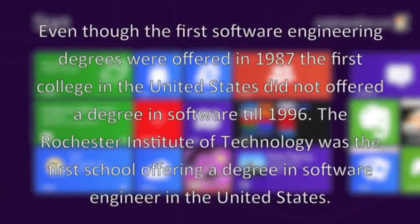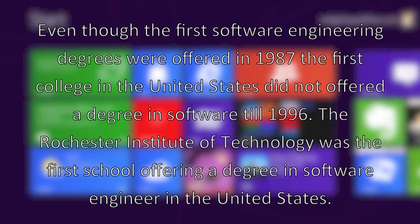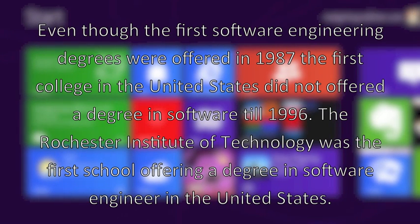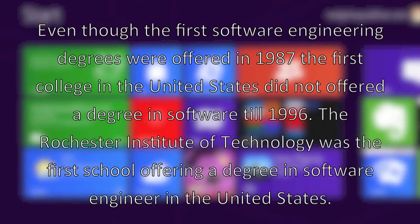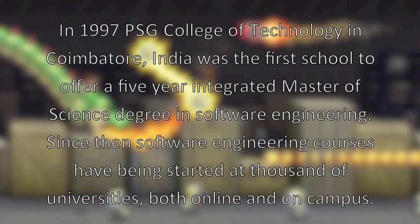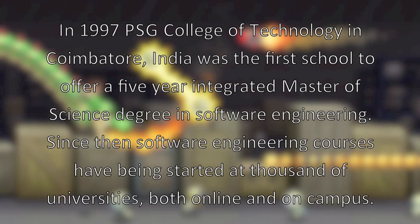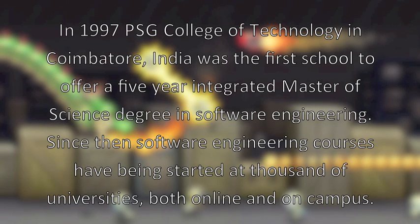The first software engineering degrees were offered in 1987. The first college in the United States did not offer a degree in software engineering until 1996. The Rochester Institute of Technology was the first school offering such a degree in the United States. In 1997, PSG College of Technology in Coimbatore, India was the first school to offer a five-year integrated Master of Science degree in software engineering.